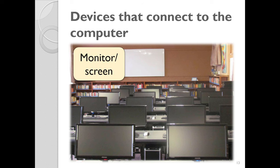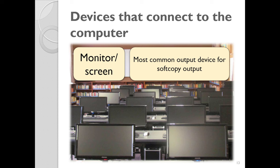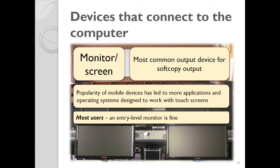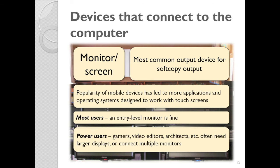The monitor is the most common output device for soft copy — what we see on the screen. You get different sizes, touch screens, different quality monitors, and monitors with different refresh rates. For most users, an entry-level monitor is fine. But power users always need something more. For example, I currently have three monitors: one is recording, one is displaying the presentation, and the third shows everything else going on on my PC. It depends what type of user you are.